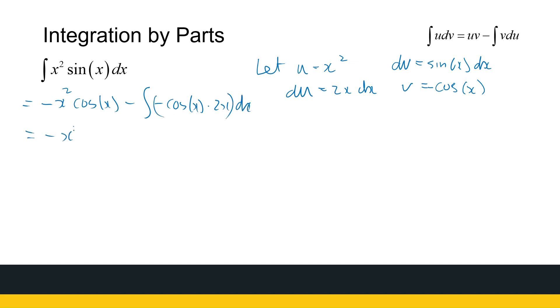Let's just tidy that up a bit. Minus x squared cos x plus 2 times the integral of x cos x dx.